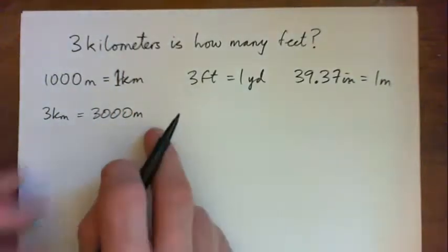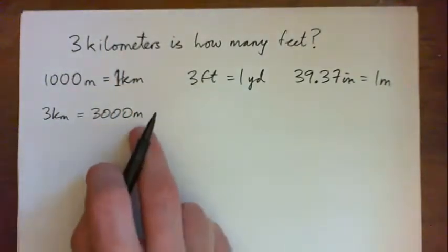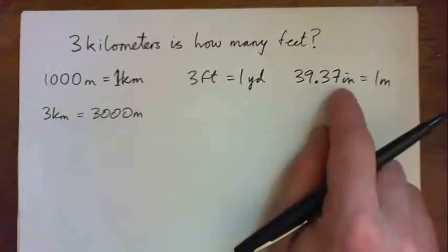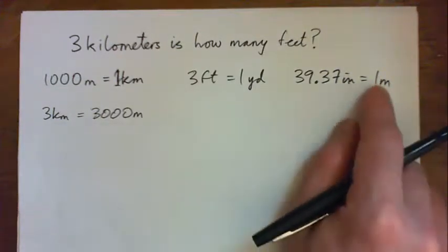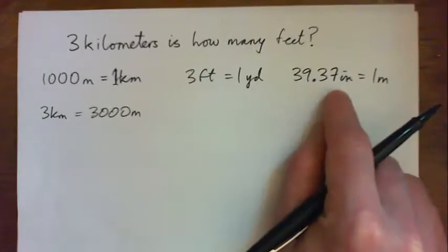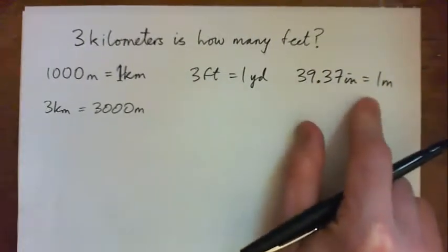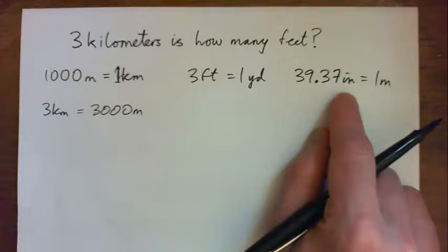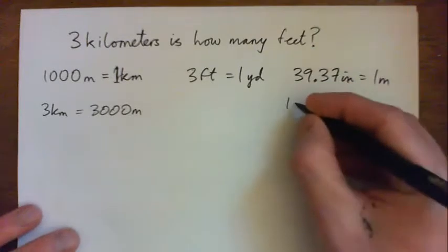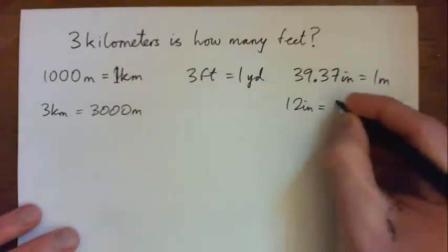And now we can figure out how to get from meters to inches. So if I multiply by 39.37 I should get to inches. And then, oh sorry, 12 inches in one foot.